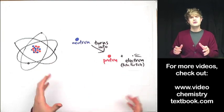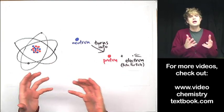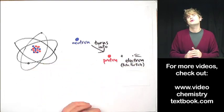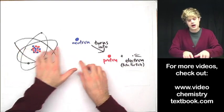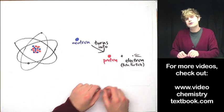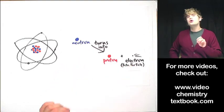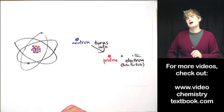Yeah, believe it or not, that's actually possible. Neutrons and protons can turn into each other under certain circumstances. And so in beta decay, you have a neutron and it turns into a proton. This process of a neutron turning into a proton makes a new electron for the atom.